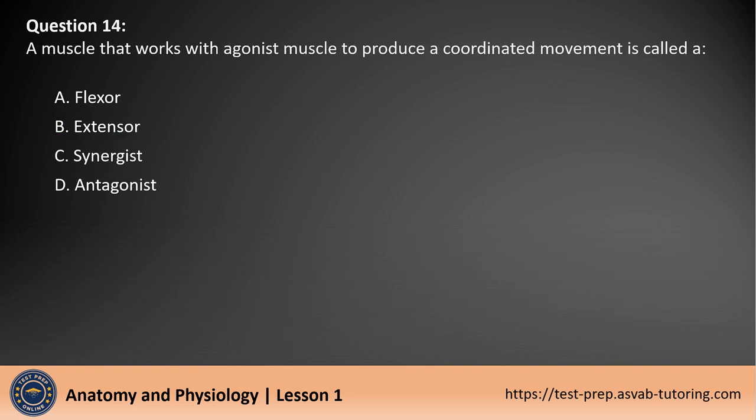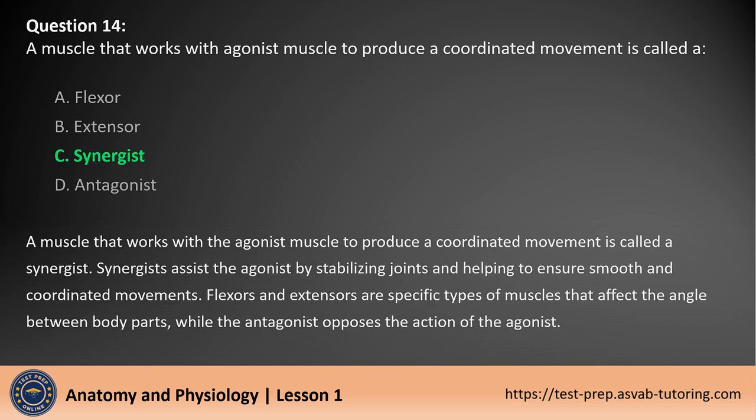Question 14. A muscle that works with the agonist muscle to produce a coordinated movement is called a: A. Flexor. B. Extensor. C. Synergist. D. Antagonist. The answer is C. A muscle that works with the agonist muscle to produce a coordinated movement is called a synergist. Synergists assist the agonist by stabilizing joints and helping to ensure smooth and coordinated movements. Flexors and extensors are specific types of muscles that affect the angle between body parts, while the antagonist opposes the action of the agonist.